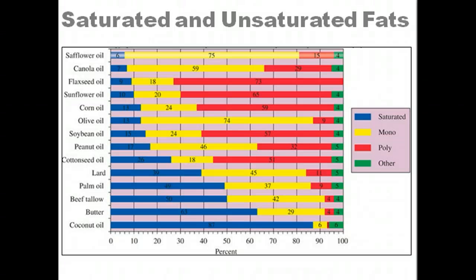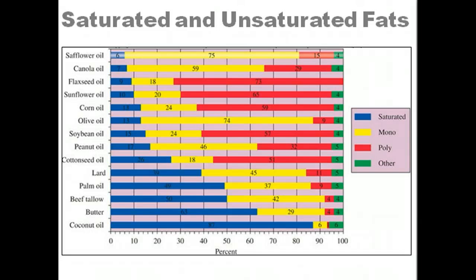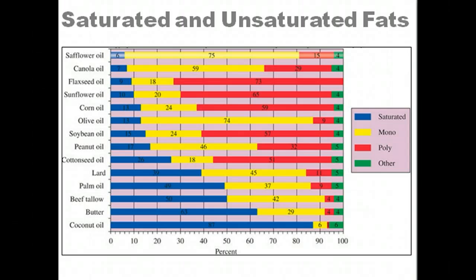The lower melting points of triglycerides rich in unsaturated fatty acids are related to their differences in three-dimensional shape. Hydrocarbon chains of saturated fatty acids can lie parallel with strong London dispersion forces between their chains, and they pack into well-ordered forms and melt above room temperature. Because of the cis-configuration of the double bonds in unsaturated fatty acids, their hydrocarbon chains have a less ordered structure and London dispersion forces between them are weaker. These triglycerides have melting points below room temperature.